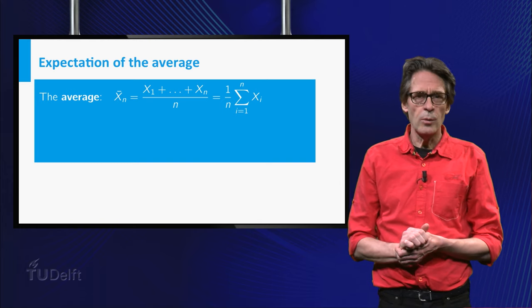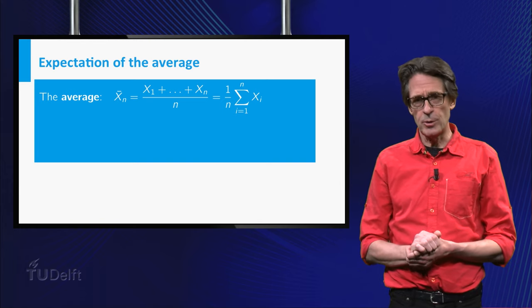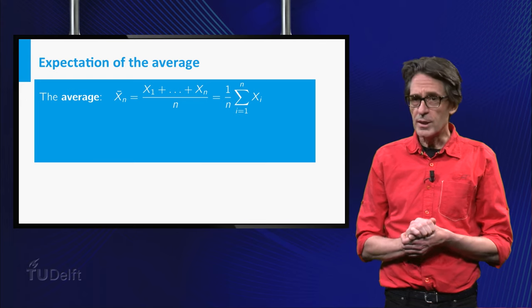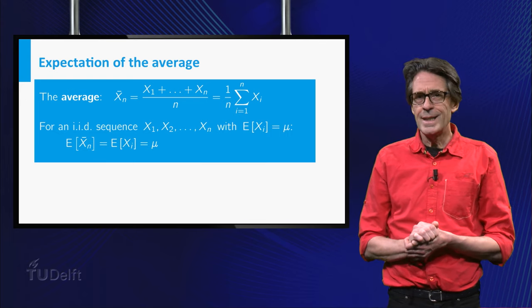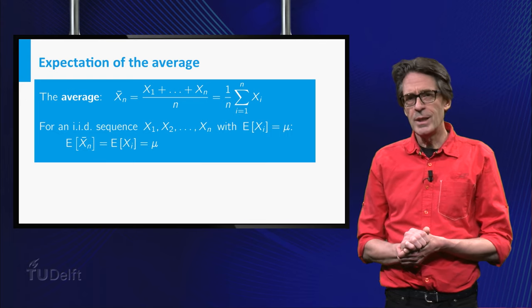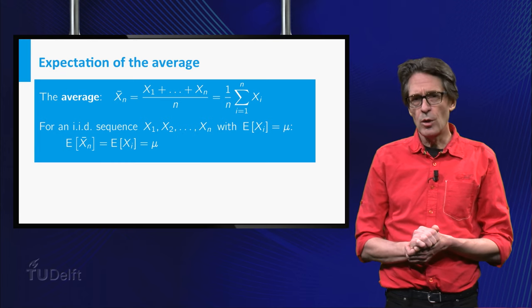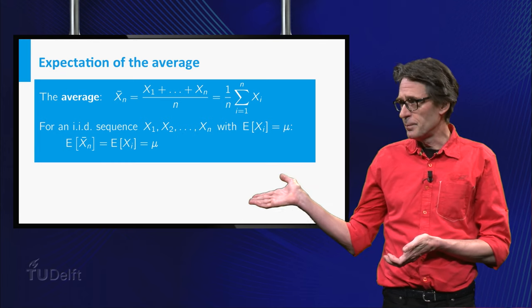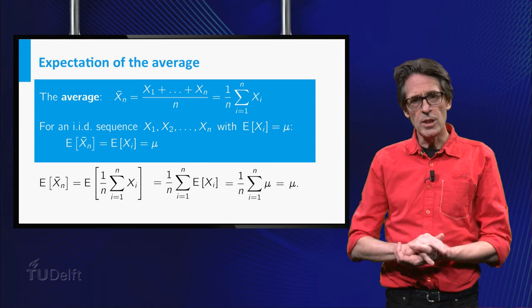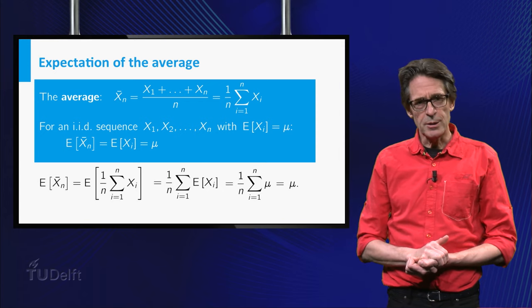Well, why would we consider the average of measurements? First look at its expectation. The expectation of the average is equal to the expectation of the individual xᵢ. This follows easily from the rules of the expectation.